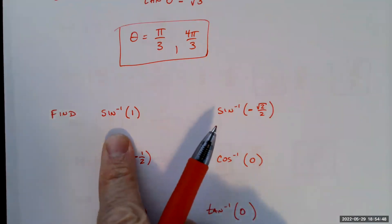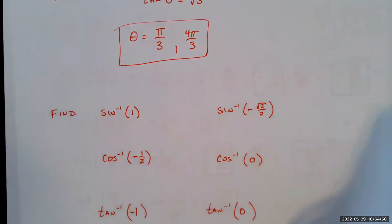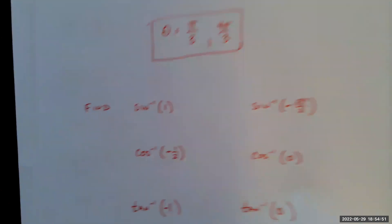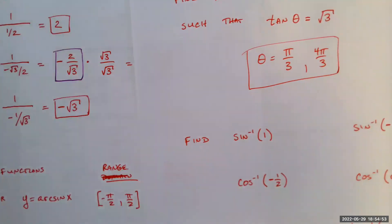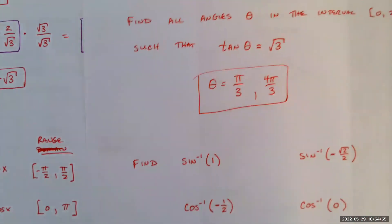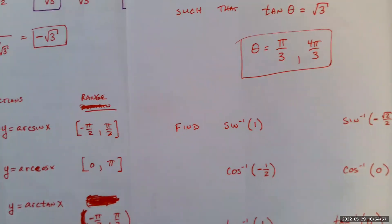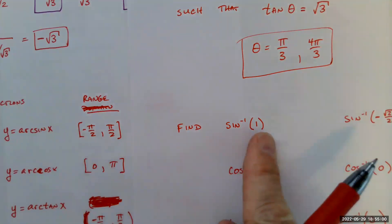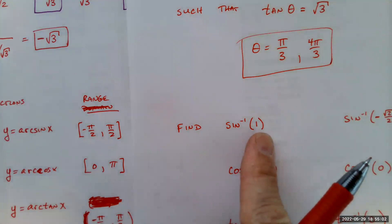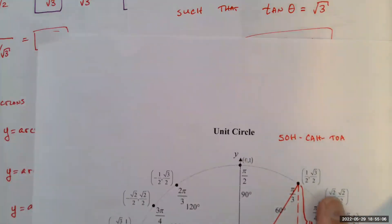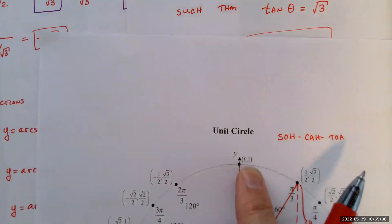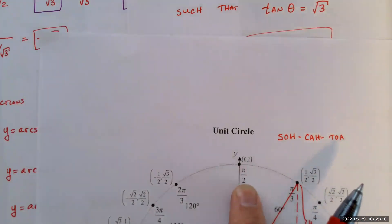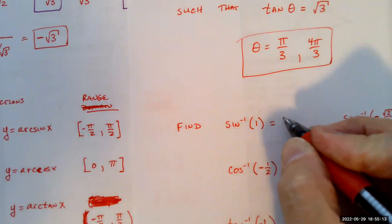For inverse sine, keep in mind the range must be between negative π/2 and π/2. Where is the sine equal to 1? The y-coordinate equals 1 at π/2, so the inverse sine of 1 equals π/2, which is indeed in that interval.